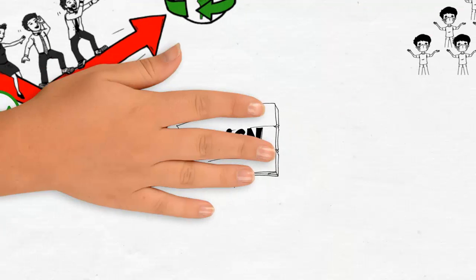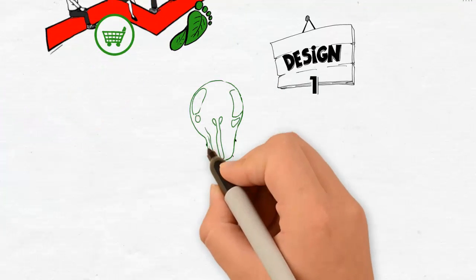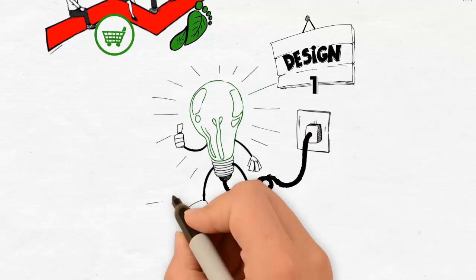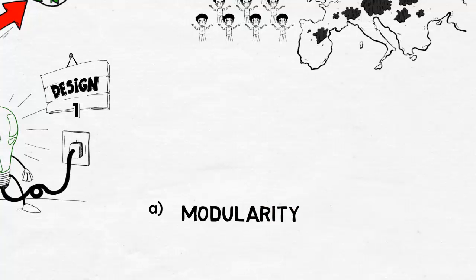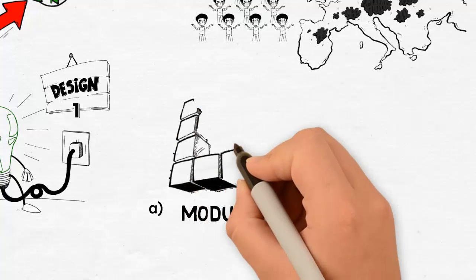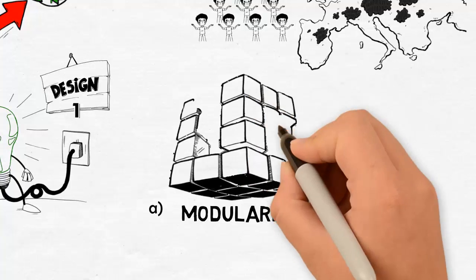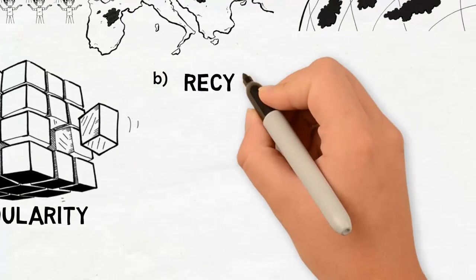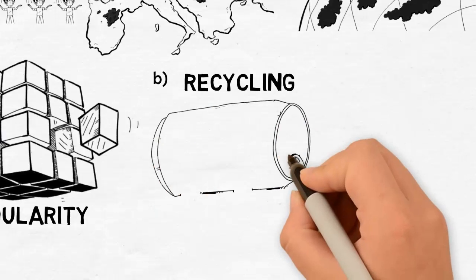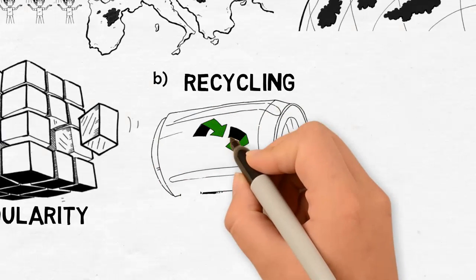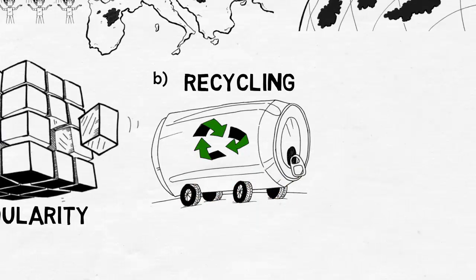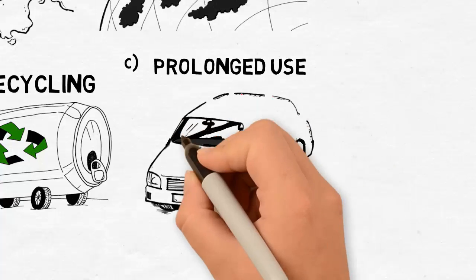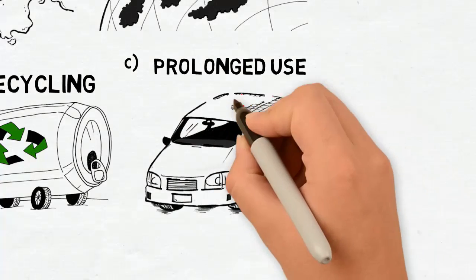One: Design. Circular pioneers are adopting new design principles to reinvent the way vehicles are manufactured. Car components are designed with modularity and upgradability in mind, so they can be easily replaced when broken or a newer version is released. Green design focuses on increasing the use of recycled materials in the manufacturing of the main body of cars. Design for prolonged use implies the adoption of innovative solutions to extend the life cycle of vehicles.